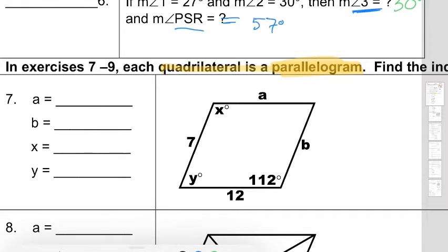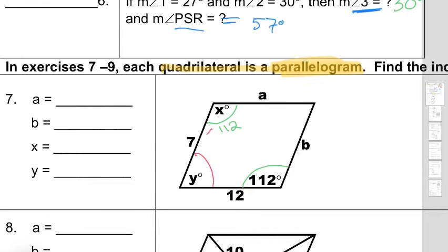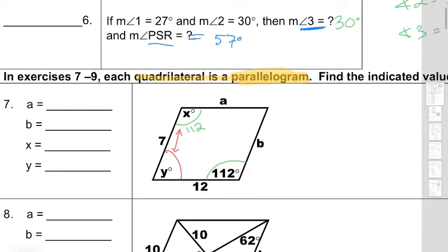I'm going to go ahead and mark my diagram. Opposite angles — we know their congruence. So already I can go ahead and answer that x is 112. We know that consecutive interior angles, so that angle up there and that angle up there, means they add up to 180. So if I know that one is 112, all I got to do is subtract 112 from 180, and that gives me an angle measurement of 68 degrees. So y is 68 degrees.